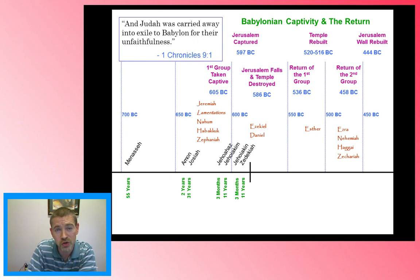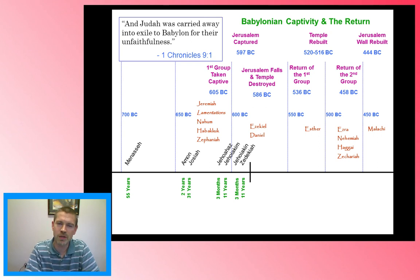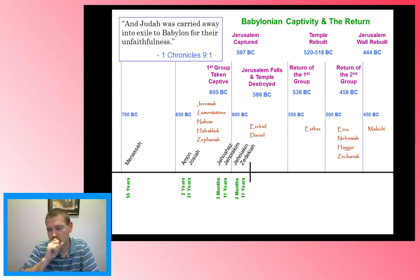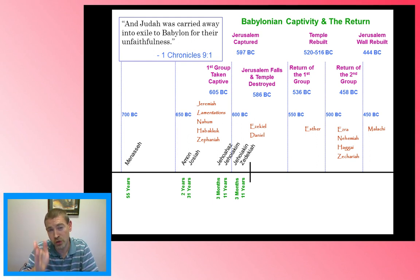Haggai and Zechariah are two great prophets who encourage the people to work and get these things done. And Malachi brings us to the very end of the Old Testament. As far as we can tell, he is the last of the prophets. His very ending comments tell us that something is coming — Elijah will return the hearts of the fathers back to the sons, the hearts of the sons back to the fathers — setting the stage for John the Baptist. And as soon as we get to the New Testament, that's where we pick up the story of the Bible.